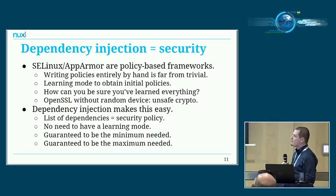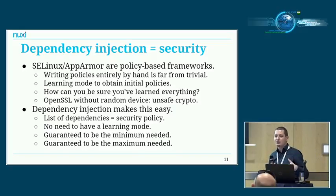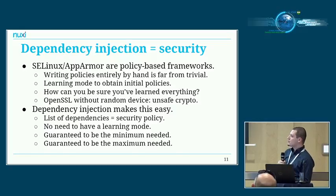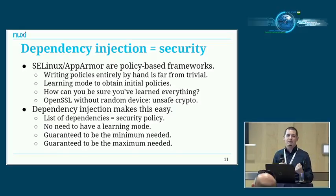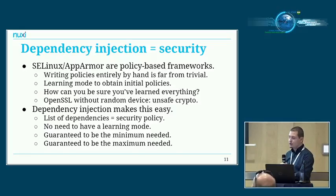My idea is that dependency injection actually makes this really easy, because the list of dependencies that a program has is the security policy. Those are the things it needs to access the outside world, and that's exactly what you want to encode in a security policy. So there's no need to have a learning mode. Best of all, using dependency injection for this purpose is guaranteed to be the minimum list of things that need to be accessible to the application — but it's also the maximum, so it's a really accurate policy.